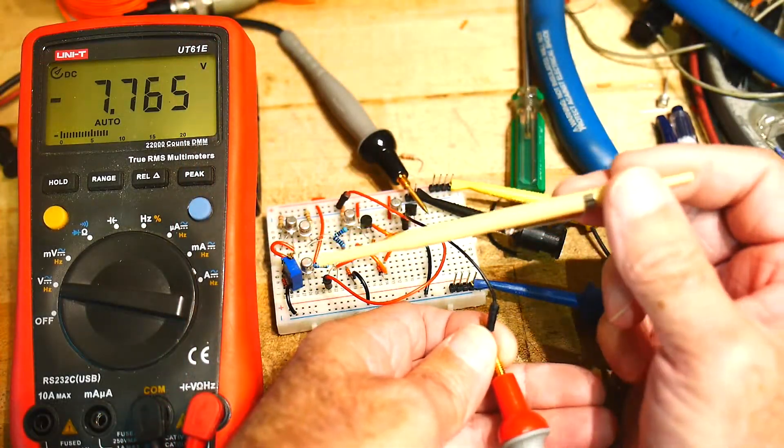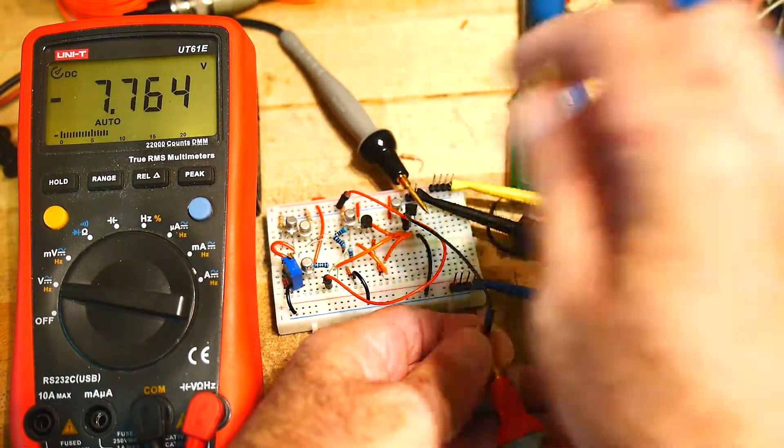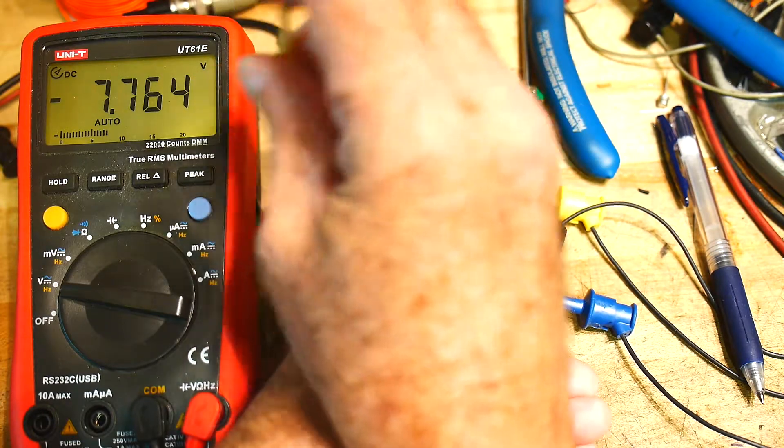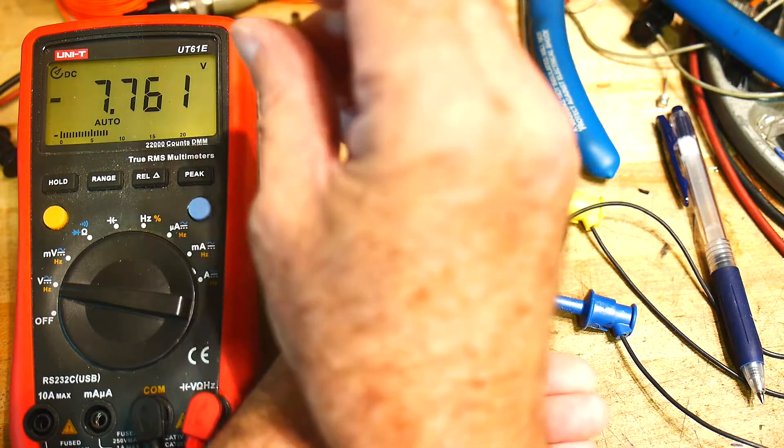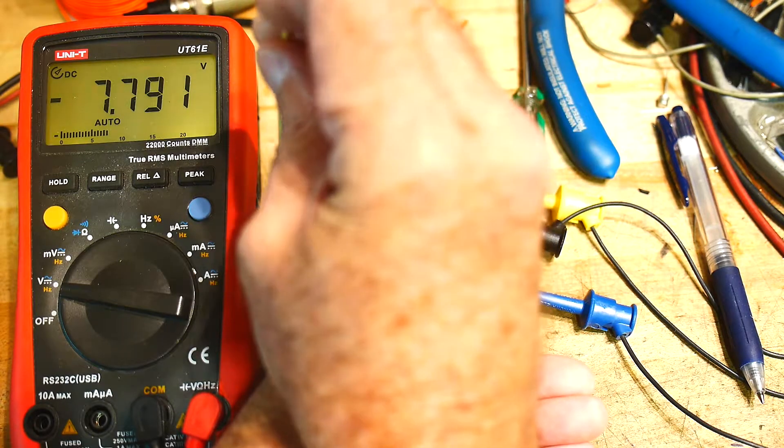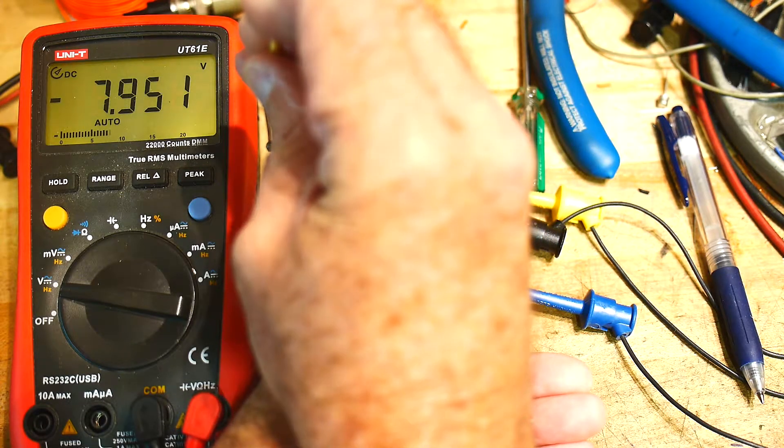All right, we have the 10-turn pot. We're looking at the output. I have the input grounded, and I'm going to adjust the potentiometer. That will adjust the bias current for the front amplifiers. We're making it worse that direction.